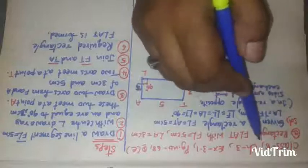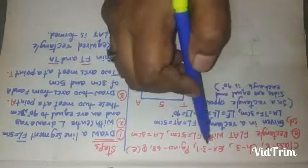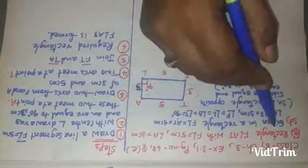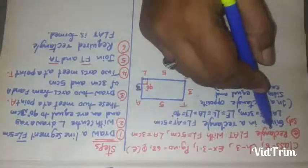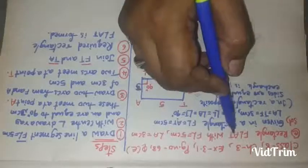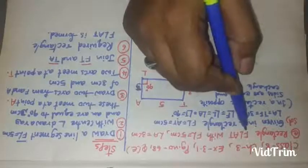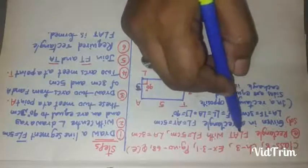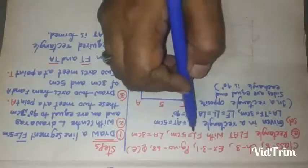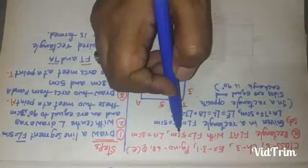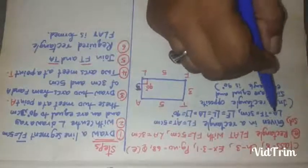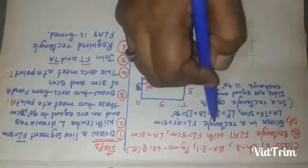Hello children, let us see class 8 chapter 3, exercise 3.1, page number 68, question number — see here what we should construct: a rectangle FLAT. FL equals 5 centimeters, LA equals 3 centimeters.